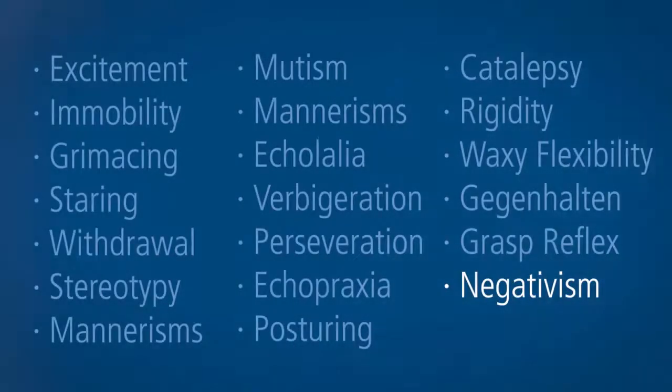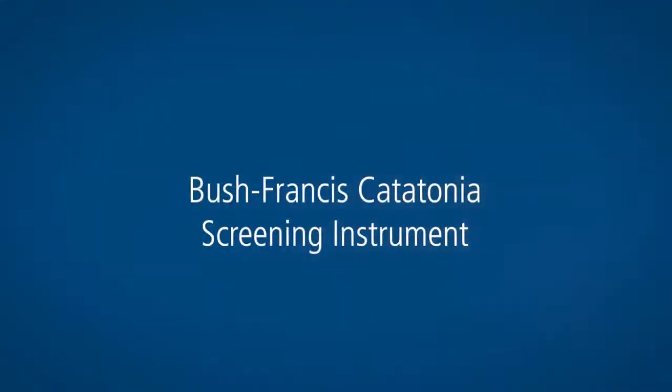At this point, Mr. Tucker has already tested negative for the 14 screening items on the Bush-Francis Catatonia Rating Scale, which is also known as the Bush-Francis Catatonia Screening Instrument. I've also assessed for Gegenhalten and grasp reflex for ease of sequencing. Normally you don't need to test for the remaining items on the full Bush-Francis Scale unless the patient is positive for two or more items on screening.